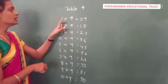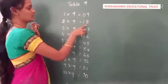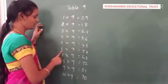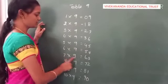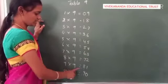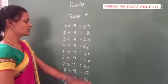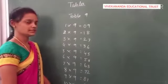So 1 time 9 is 09, 2 times 9 is 18, 3 times 9 is 27, 4 times 9 is 36, 5 times 9 is 45, 6 times 9 is 54, 7 times 9 is 63, 8 times 9 is 72, 9 times 9 is 81, 10 times 9 is 90. So this is how we can write 7, 8 and 9 tables.